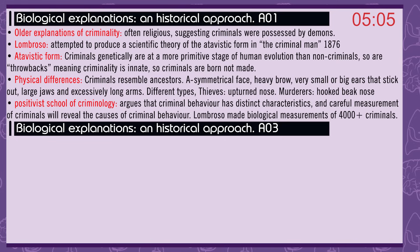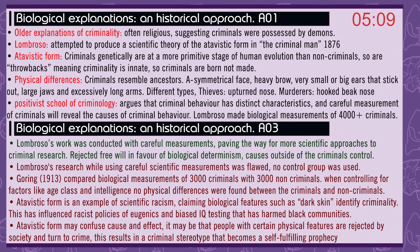Lombroso made biological measurements of over 4,000 criminals. His work used careful measurements, paving the way for more scientific approaches to criminal research. He rejected free will in favour of biological determinism, suggesting the causes of crime were outside of the criminal's control. However, Lombroso's research was flawed as no control group was used. Goring in 1913 compared biological measurements of 3,000 criminals with 3,000 non-criminals. When controlling for factors like age, class, and intelligence, no physical differences were found. Atavistic form is an example of scientific racism — claiming biological features such as dark skin identify criminality — and has influenced racist policies of eugenics and biased IQ testing that harmed Black communities. Atavistic form might also confuse cause and effect: people with certain physical features may be rejected by society and turn to crime, resulting in a criminal stereotype that becomes a self-fulfilling prophecy.